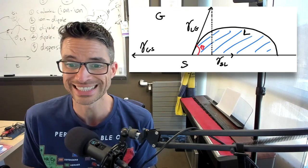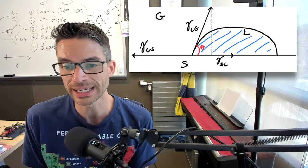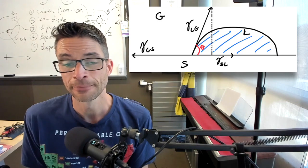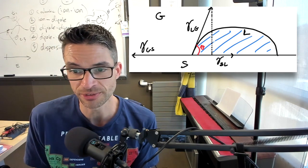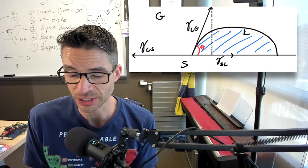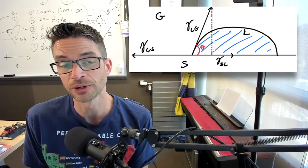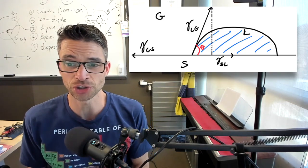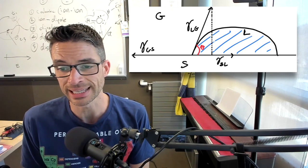You have the liquid-gas interface that forms a projection on the surface, and the solid-liquid interfacial tension. And those two tensions serve to contract the bubble and make it less wetting.